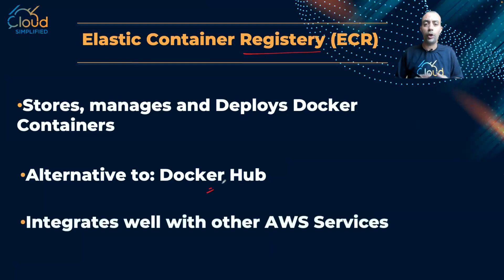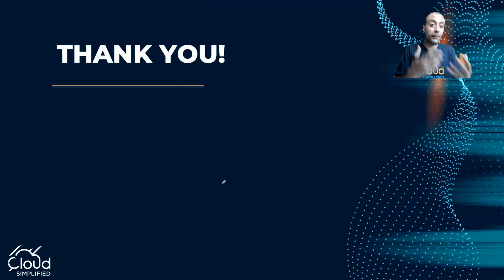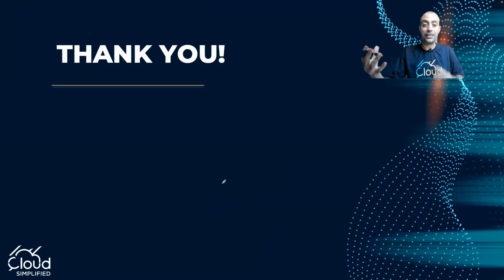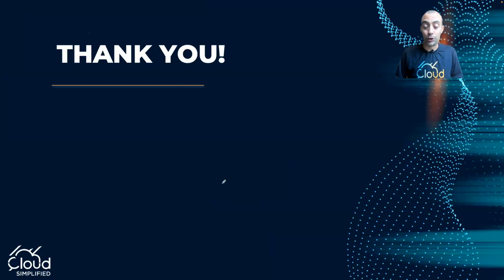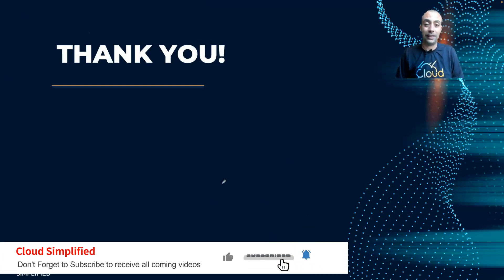ECR also integrates very well with other AWS services as a native AWS service. So to recap this lesson: we use Docker containers, managed through Kubernetes. On AWS, management is through EKS or ECS. Container images are saved on ECR. I hope this lesson was simplified enough — even without a containers background — and that you can now differentiate the use cases for each service. Thank you for watching and see you in the next lessons.